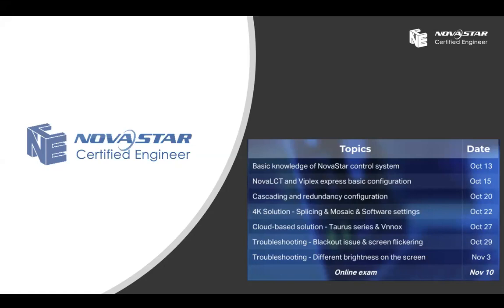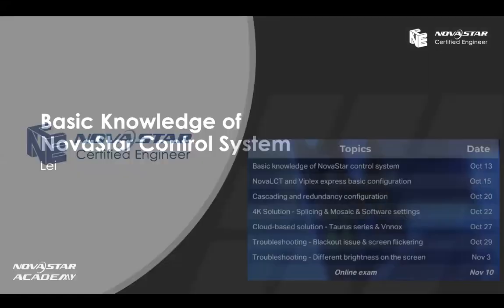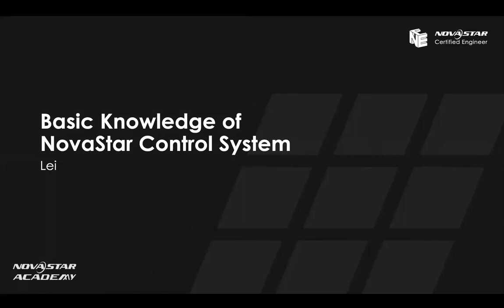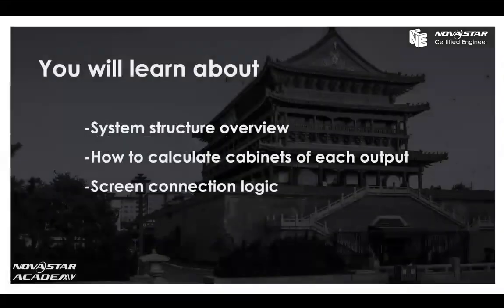This term, we will have seven courses and a final examination. You could get an online training certification if you sign in for at least six courses and pass the final exam. Today, we will spend one hour together. For this first course, we will talk about the basic knowledge of Novastar control system, and we also have Q&A time after the presentation. In this class, you will learn about three parts: system structure overview, how to calculate cabinets for each output, and the screen connection logic.